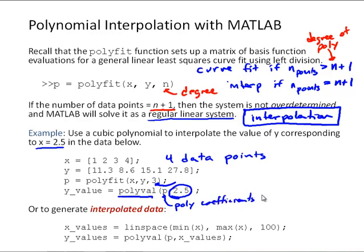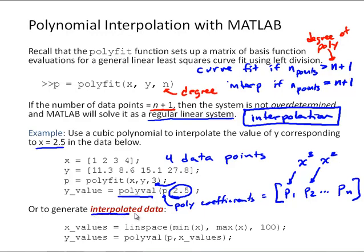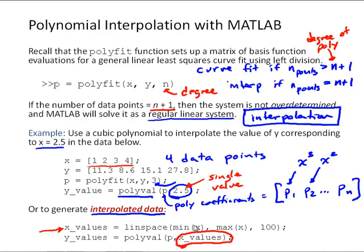Recall that the polynomial coefficients output from polyfit are always in order p1, p2, to pn — where p1 is the coefficient to x cubed, p2 the coefficient to x squared, and so on. Another thing we'll do sometimes is generate interpolated data. Instead of finding data at a single value of 2.5, maybe we want to generate a hundred points in between those four values. We set up a vector of x values, then use polyval with those polynomial coefficients to calculate interpolated data for each of those x values.